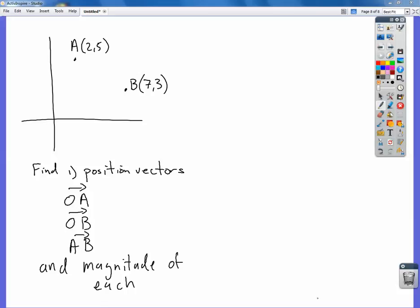Okay, so this one is about finding position vectors, relative position vectors from the origin and from one point to another, and the magnitude.